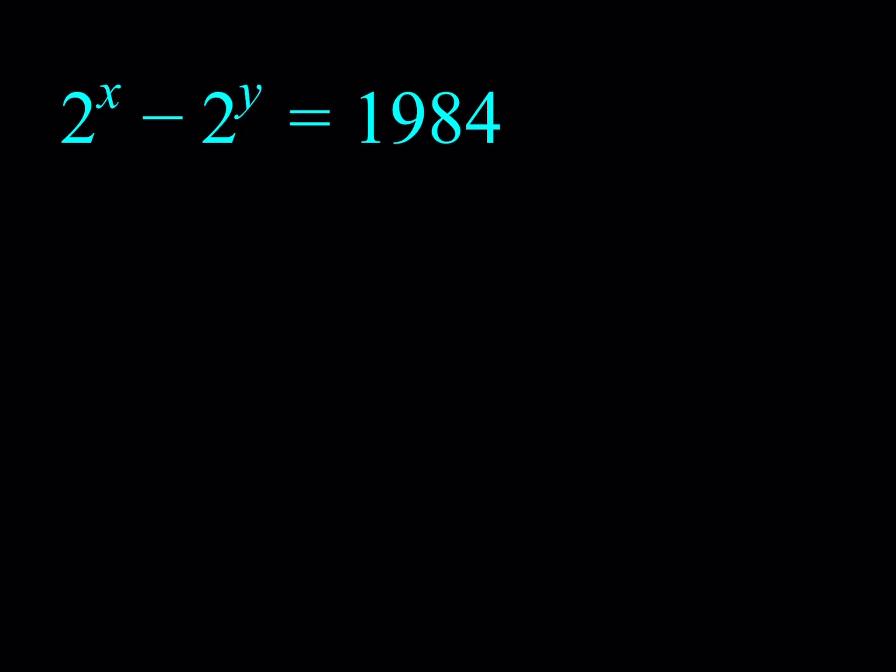Now, we do have this equation 2 to the power x minus 2 to the power y equals 1984. Now, I know that some of you might be guessing the answer here and trying to find it by guess and check,